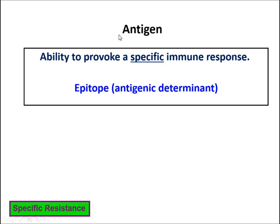When we talk about adaptive immunity, it's important that we define an antigen. An antigen is the foreign substance that we're going to launch an attack against, and by definition it has the ability to provoke a specific immune response. Along with this, when we talk about antigens, we may use the word epitope — also called an antigenic determinant. An epitope is just that part of the antigen that allows us to identify specifically which antigen it is, allowing us to recognize it.